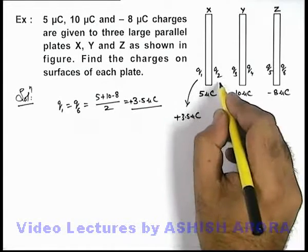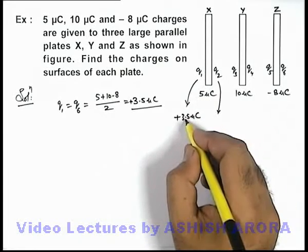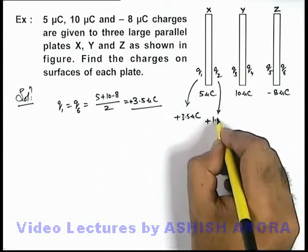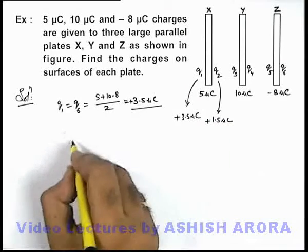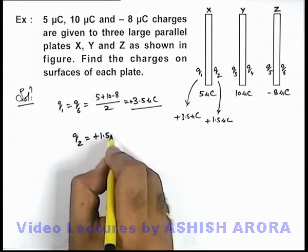In this situation we can directly write by conservation of charge, the value of charge q2 will be 5 minus 3.5, it will be plus 1.5 micro coulomb. So here we can write the value of charge q2 will be plus 1.5 micro coulomb.